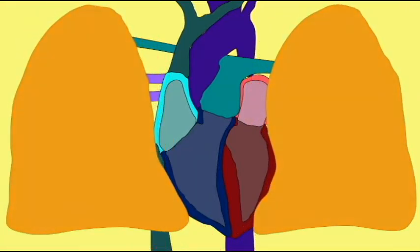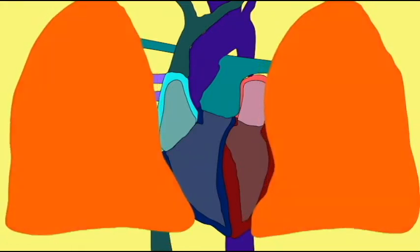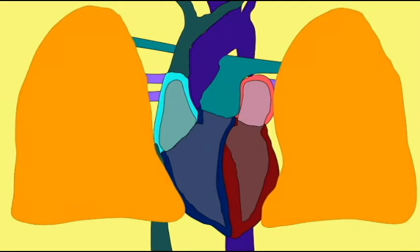The right atrium transports blood to the right ventricle, and the right ventricle sends it from the heart. This blood then travels to the lungs, where gas exchange can add oxygen.